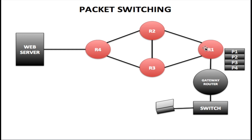For P2, R1 finds that the first route is now congested, so it picks the route to R3. R3 finds its direct route congested and uses a route to R2, which then sends the packet to R4 and on to the web server. For P3 and P4, the same method is used to send these packets to the web server.